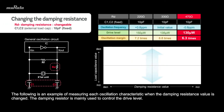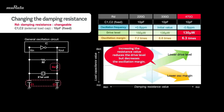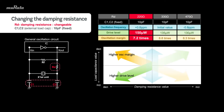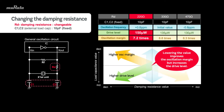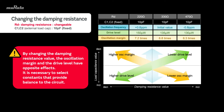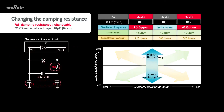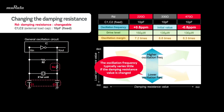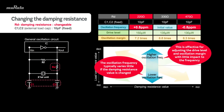Here is an example of measuring each oscillation characteristic when the damping resistance value is changed. The damping resistor is mainly used to control the drive level. Increasing the resistance value reduces the drive level but decreases the oscillation margin. Conversely, lowering the value improves the oscillation margin but increases the drive level. By changing the damping resistance value, the oscillation margin and the drive level have opposite effects, so it is necessary to select constants that provide balance to the circuit. The oscillation frequency typically varies little if the damping resistance value is changed, making it effective for adjusting the drive level and oscillation margin with little impact to the frequency.